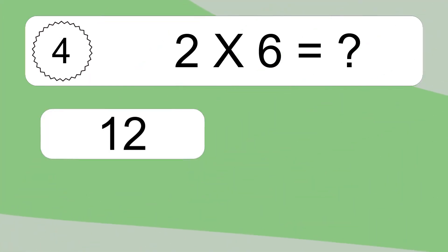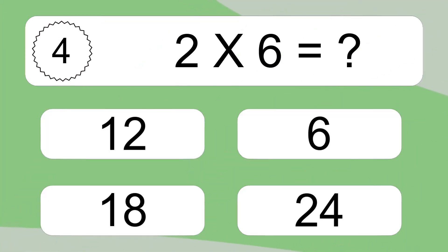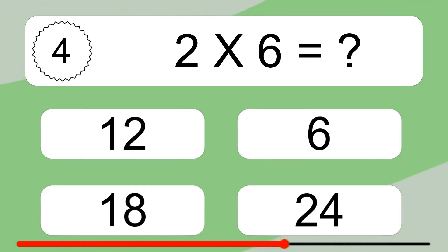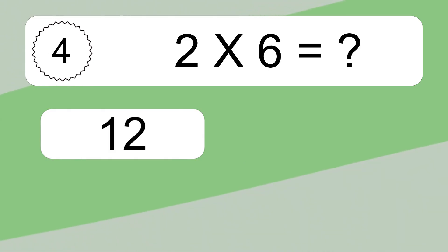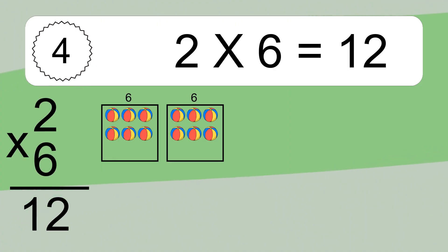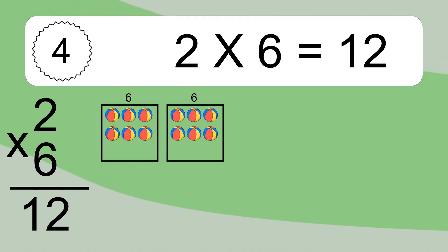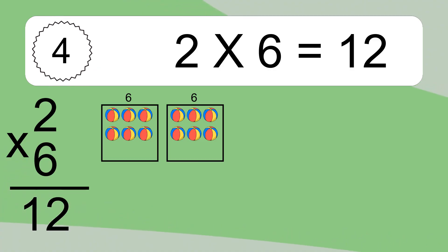2 times 6 equals what? 2 times 6 equals 12. We have 2 boxes, and each box has 6 colorful balls inside. If you count all the balls in all the boxes together, you will have 2 times 6 balls. This equals 12 balls.